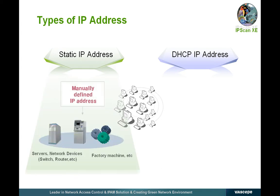For the static IP, the administrator needs to assign and set the IP addresses manually. The static IP can be used for the ordinary personal computer, mostly for devices that do not require a change to the IP address of the network equipment, such as a switch, router, and the server. The static IP is required especially for the network machinery in the production line with no change to the IP address.